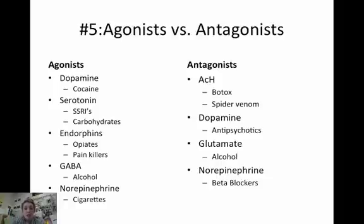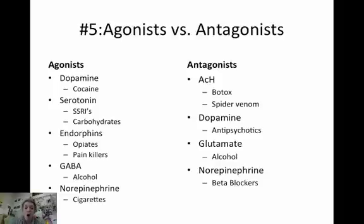Cigarettes increase norepinephrine — they're an agonist. For antagonists: Botox and spider venom are both ACH antagonists because they prevent muscle movement. Antipsychotics are dopamine antagonists — they lower dopamine by blocking dopamine receptors. Alcohol decreases excitatory glutamate messages. Beta blockers are norepinephrine antagonists, used for heart disease — they prevent or dampen the norepinephrine response.